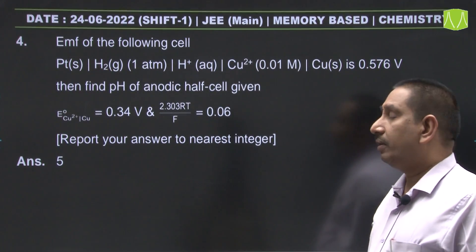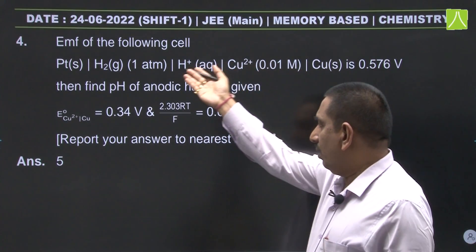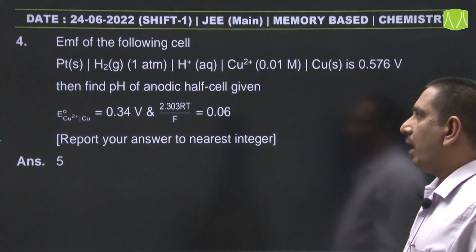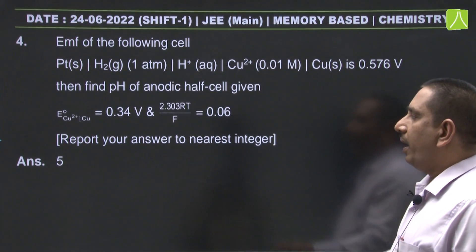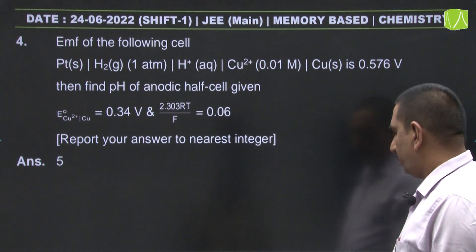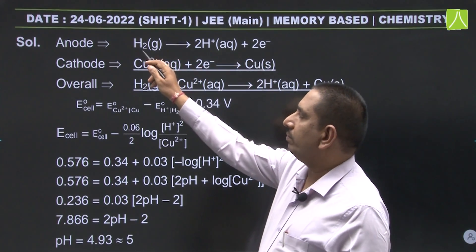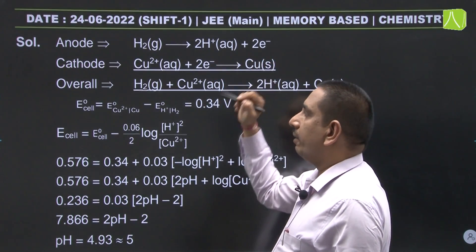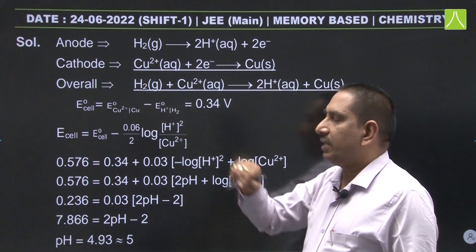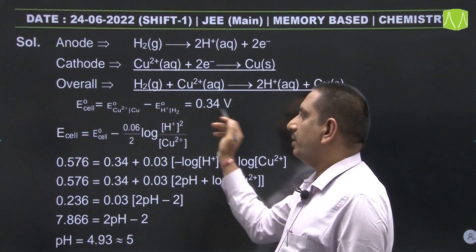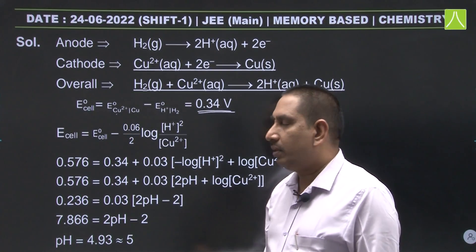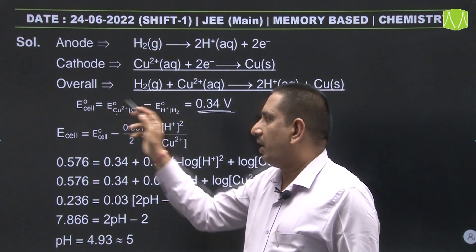The next question is from electrochemistry. A cell notation is given where a hydrogen electrode is taken as anode and copper electrode as cathode. We need to find the pH of the anodic half cell. The standard electrode potential for copper is given, and the 2.303RT/F value is also given. E°cell = E°copper − E°hydrogen = 0.34 − 0 = 0.34 V.